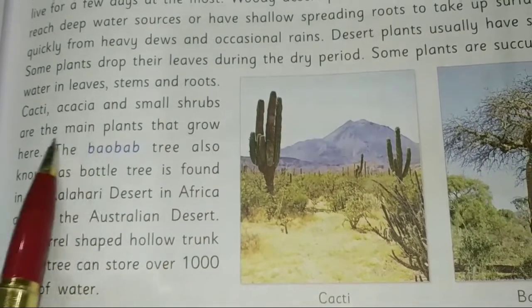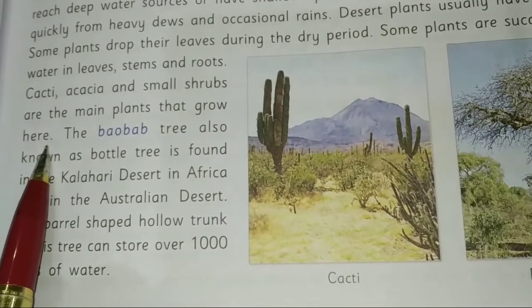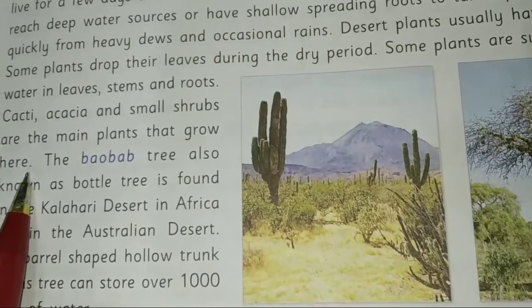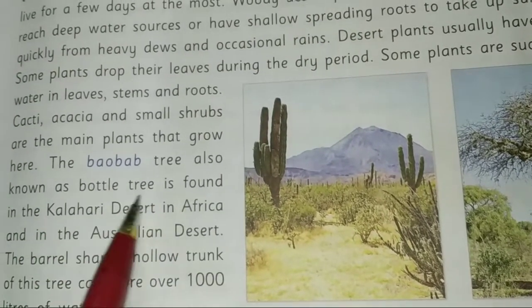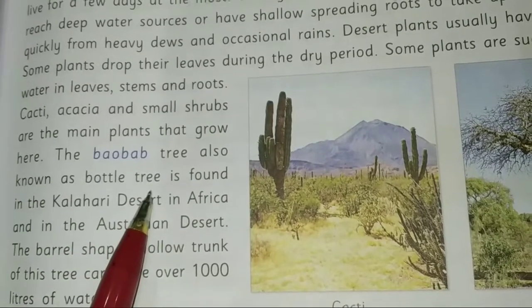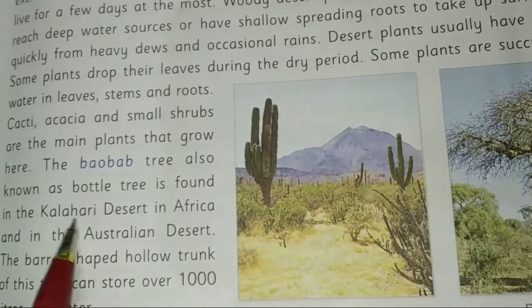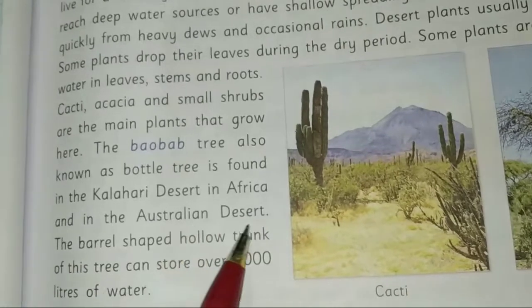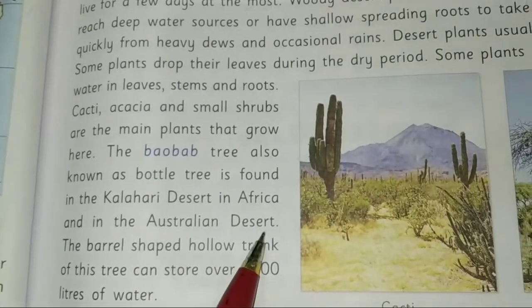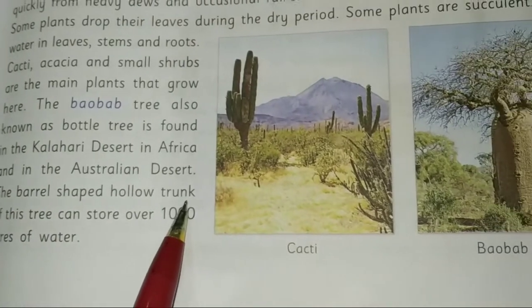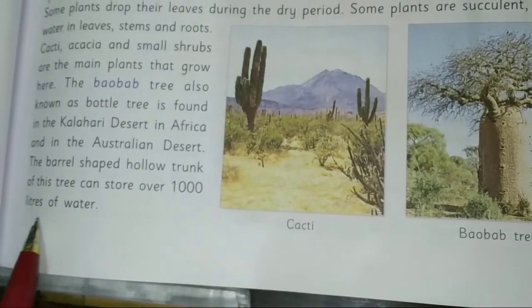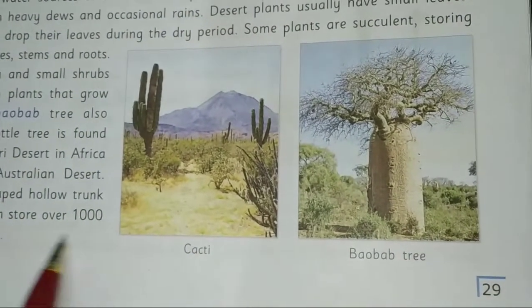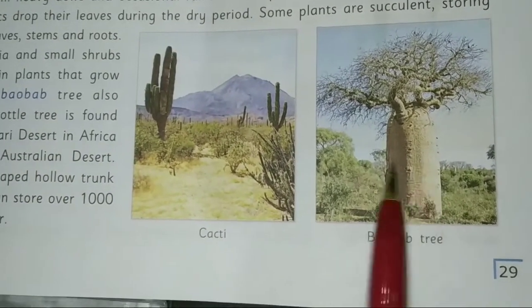Shrubs and small bushes are the main plants that grow in deserts. The baobab tree, also known as the butter tree, is found in the Kalahari Desert in Africa and in Australian deserts. The barrel-shaped hollow trunk of the baobab can store over a thousand liters of water.